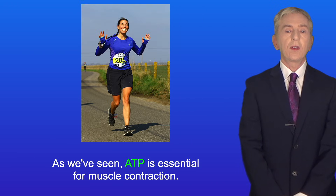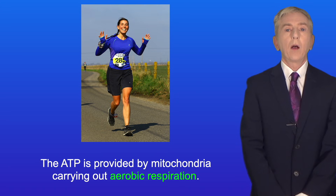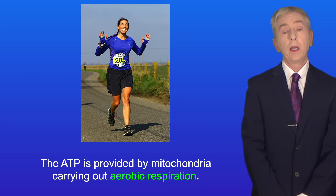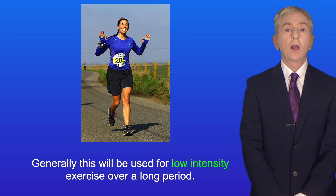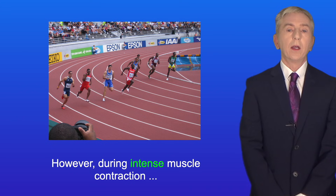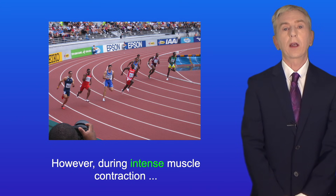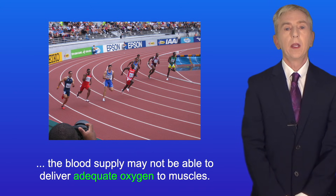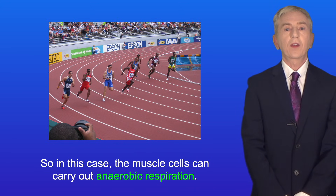As we've seen, ATP is essential for muscle contraction. ATP is provided by mitochondria carrying out aerobic respiration, and generally this will be used for low intensity exercise over a long period. However, during intense muscle contraction, the blood supply may not be able to deliver adequate oxygen to muscles, so in this case the muscle cells can carry out anaerobic respiration.